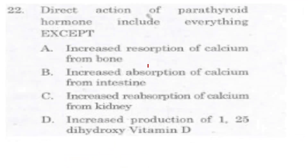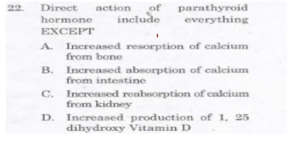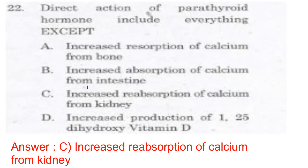Question 22: Direct actions of parathyroid hormone include which of the following? Option A is absorption of calcium from bone, Option B is increased absorption of calcium from the intestine, Option C is increased reabsorption of calcium from the kidney, Option D is increased production of 1,25-dihydroxy vitamin D. The answer is C — increased reabsorption of calcium from the kidney.